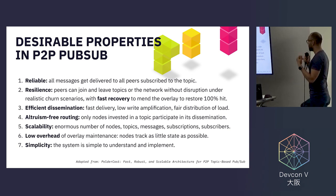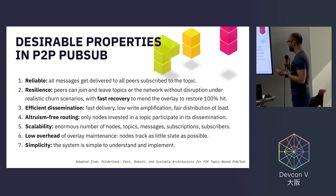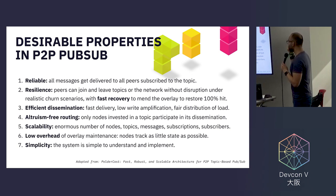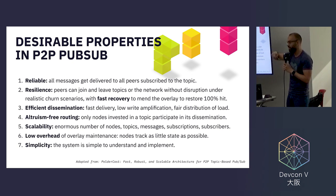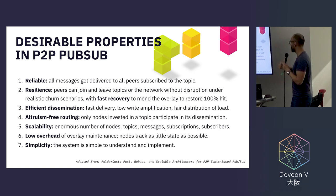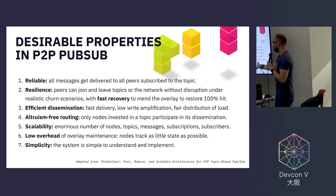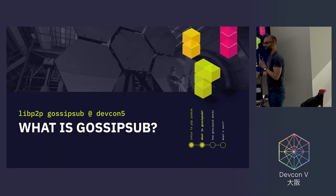The desirable properties in peer-to-peer PubSub are reliability, resilience, efficient dissemination, and altruism-free routing — meaning only those peers actually participating in a particular topic will contribute to forwarding that topic, without burdening the rest of the network. It has to be scalable across various axes: number of nodes, topics, messages, subscriptions, and subscribers. There has to be low overhead for maintenance, relying on peers making local decisions so that messages are globally routed. And ideally, it's a protocol that is simple and easy to understand — we'll see if GossipSub has managed to do this.